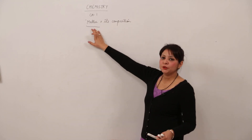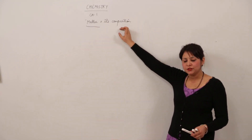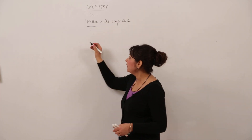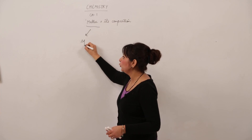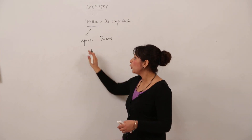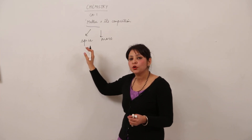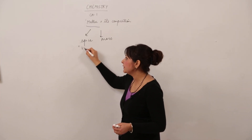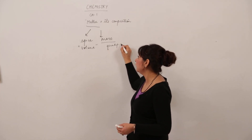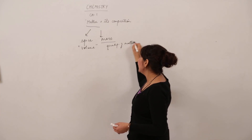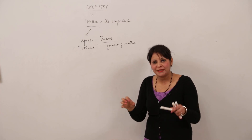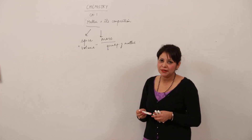We are taking up the topic of matter and its composition. Matter is anything that occupies space and has mass. Anything which occupies space has a certain volume, and mass means it has a quantity of matter in it. So anything which occupies space and has mass is called as matter.